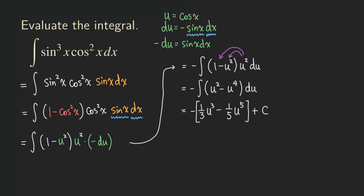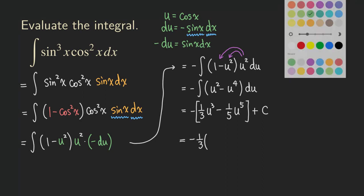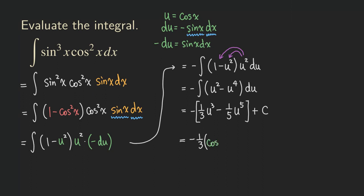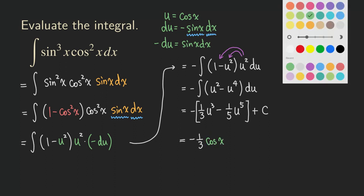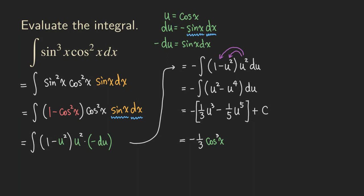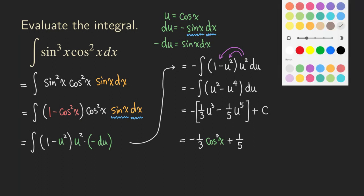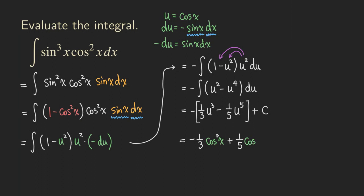For the final answer, we have negative 1/3 times cosine³x — distributing the minus sign to the minus u⁵/5 gives plus 1/5 times cosine⁵x — plus C.